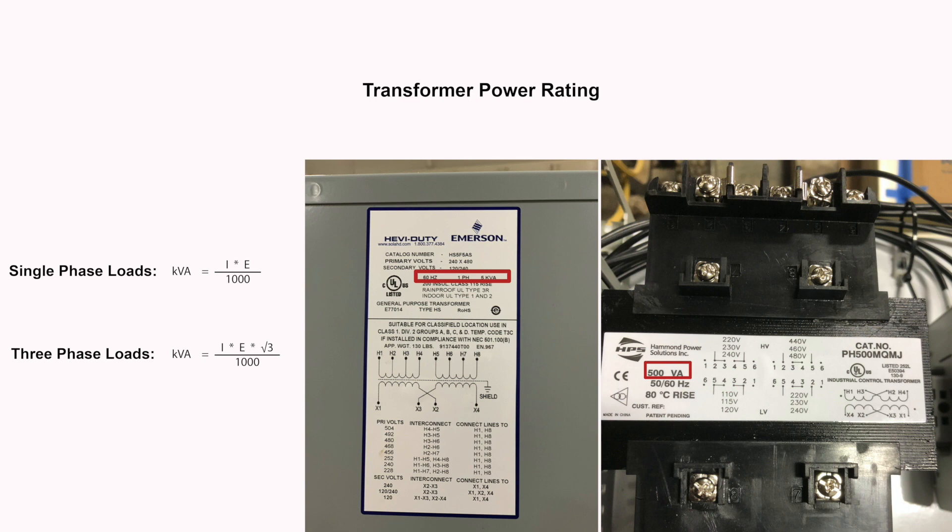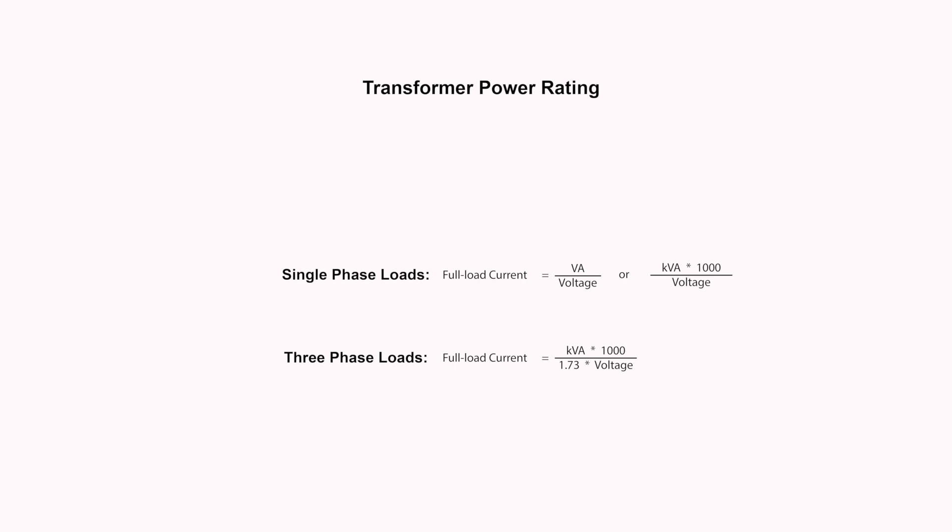Usually, the primary and secondary full load currents are not given. In this case, the volt ampere rating is given along with the primary voltage. The primary full load amps can be determined using the rating and primary voltage.